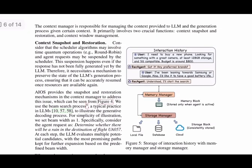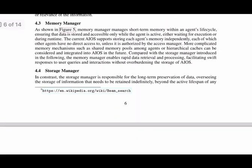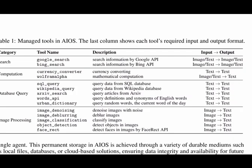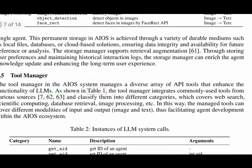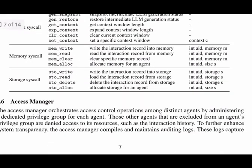Third, the memory manager and storage manager. The memory manager provides short-term memory to agents during execution. The storage manager handles long-term data storage for interaction logs and other persistent information. Fourth, the tool manager oversees a diverse set of API tools like search, computation, and image processing. The access manager implements privacy and access control policies between agents.